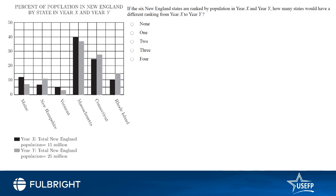This is a typical question in a GRE exam. For a data analysis question, the first thing you do is read the legend at the top of the graph: 'Percent of population in New England by state in year X and year Y.' Then you look at the axis — it shows Maine, New Hampshire, Vermont, Massachusetts, Connecticut, and Rhode Island. On the Y axis it's percent: 50%, 40%, and so on. Year X is labeled in dark color and year Y in gray.